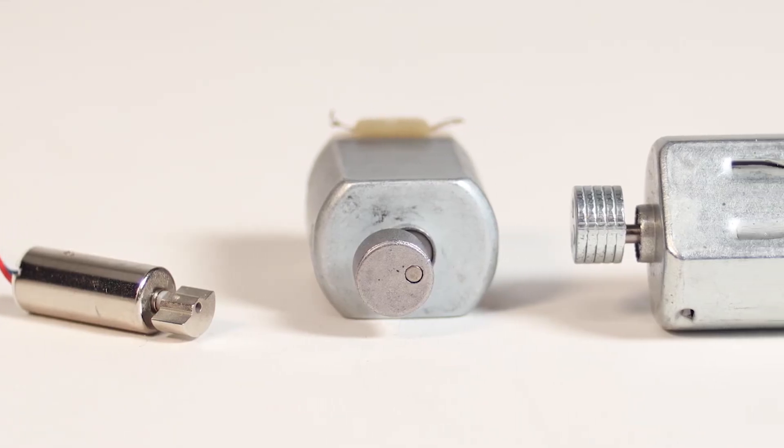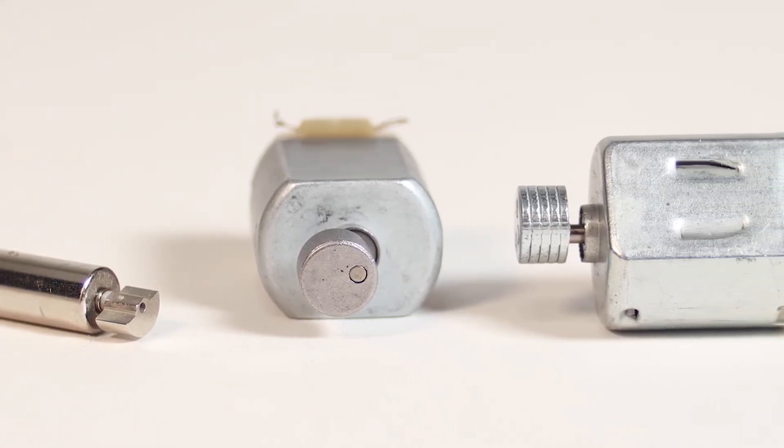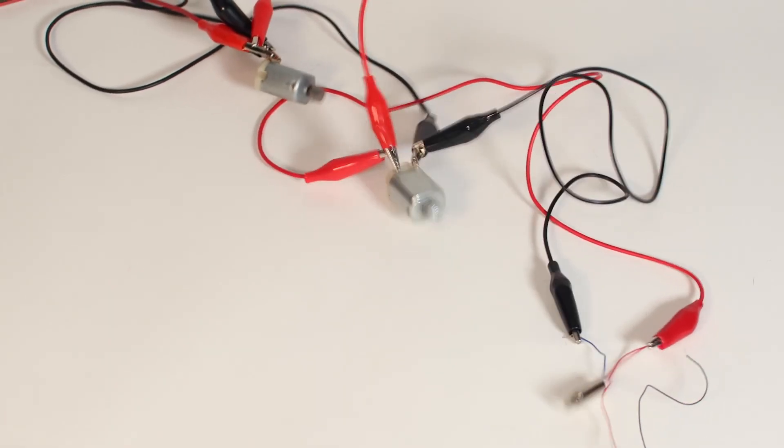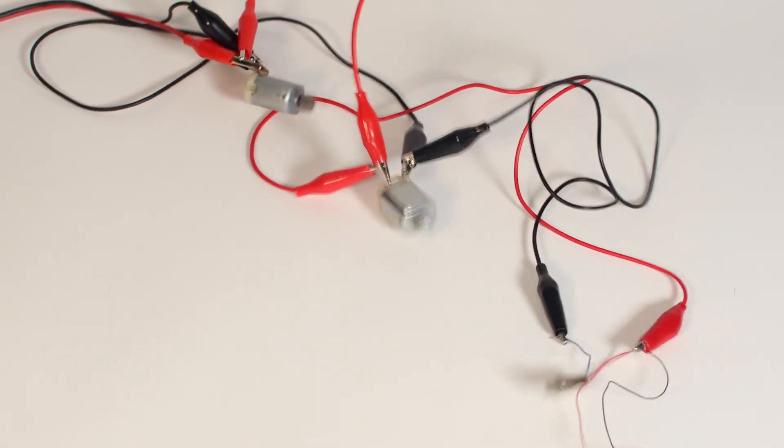If a weight is added to one side of the shaft, making it unbalanced, the spinning would no longer be smooth, making the motor vibrate.